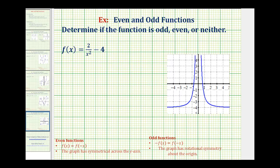Welcome back for two more examples of determining if a function is even, odd, or neither. As a quick review, a function is even if f of x equals f of negative x.